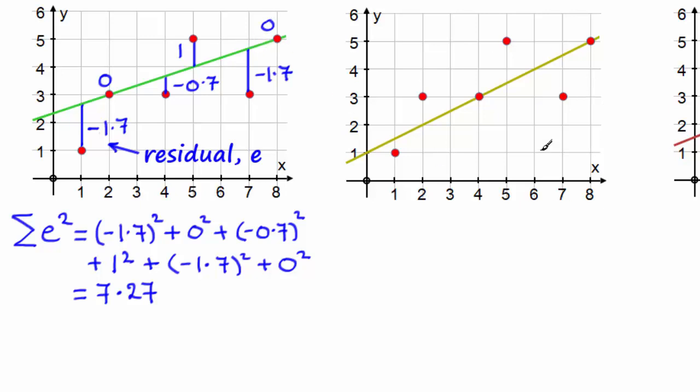Now if we turn to this second graph here, let's do much the same process. If you mark in the residuals for this one, you should find that their values are as you see here: minus 0.5, 1, 0, 1.5, minus 1.5 and 0.